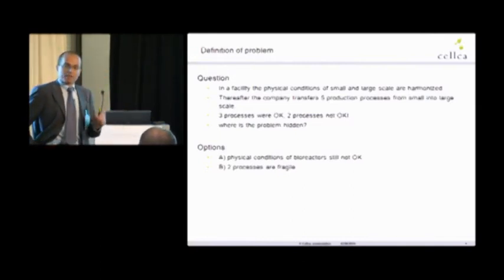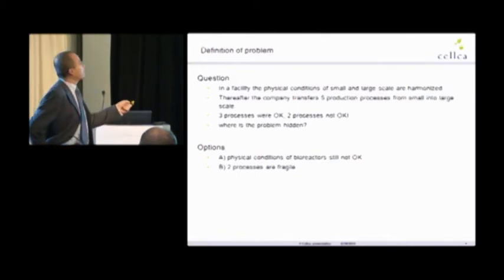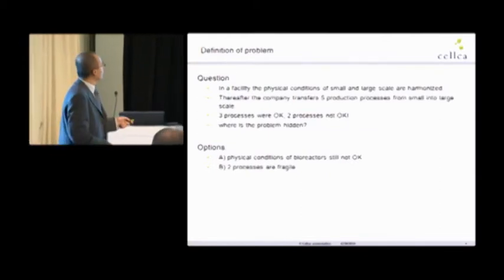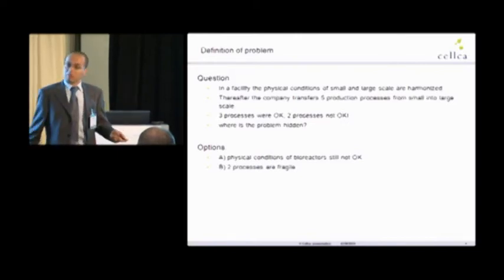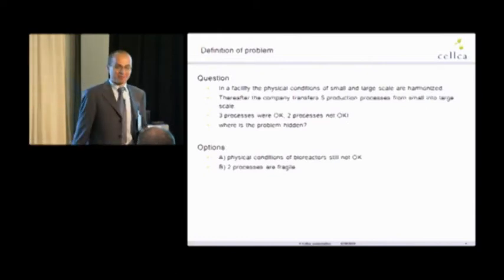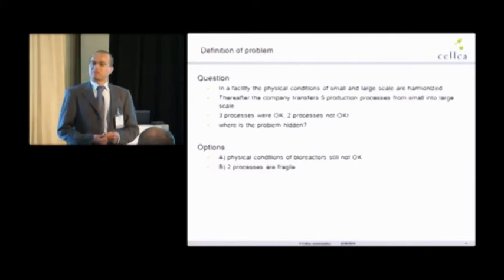After the characterization, we know when I steer my 5-liter bioreactor with 80 RPM, how to steer the 10,000 liter bioreactor. I know it because I have done this characterization before. Maybe I have to steer with 25 RPM. And three of these five processes were okay. Okay means titer is comparable, product quality is comparable. And two of them are not okay.